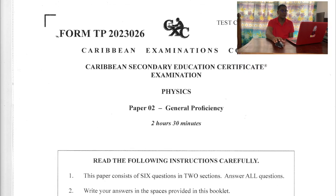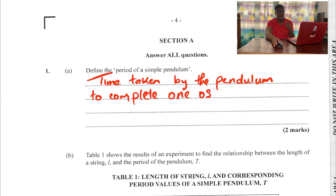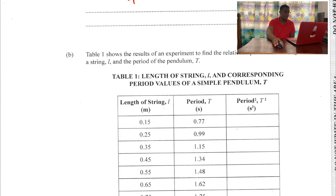Let's begin with question 1A: define the period of a simple pendulum. The answer is simply the time taken by the pendulum to complete one oscillation.